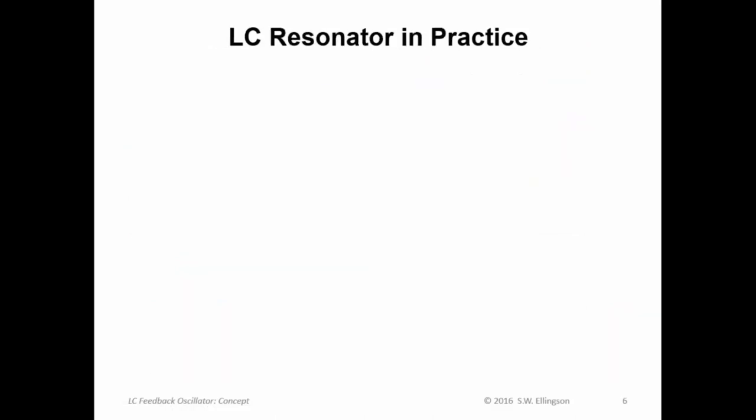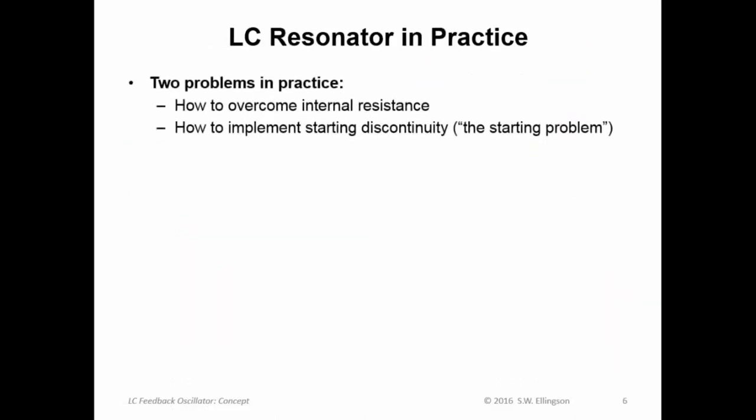So let's summarize what we have in practice. Two problems basically. One is the one I just pointed out, how to overcome the internal resistance. The second problem we're going to have is how to implement the starting discontinuity. Remember to get this process started what I did is I applied a voltage source charged up the capacitor and then removed it. So in a practical oscillator we are going to need to do something like that or we're going to have to have something that will get this thing started and that's known as the starting problem.